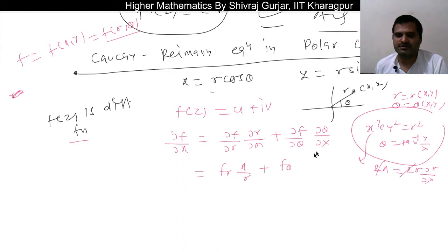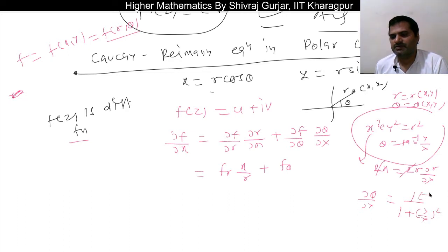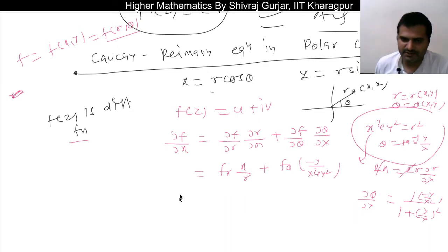So we have f_r · (x/r) + f_θ · (∂θ/∂x). Now, ∂θ/∂x: since θ = tan⁻¹(y/x), differentiating gives 1/(1 + (y/x)²) · (−y/x²), which simplifies to −y/(x² + y²). So ∂f/∂x = f_r · (x/r) + f_θ · (−y/(x² + y²)).